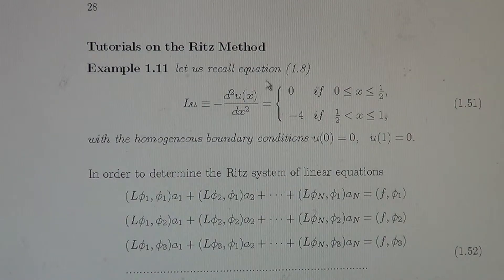Let us recall the equation we have considered during last lecture hours. Minus second derivative equals 0 for x from 0 to half, minus 4 for x from half to 1. With the homogeneous boundary value conditions, u at 0 equals 0,